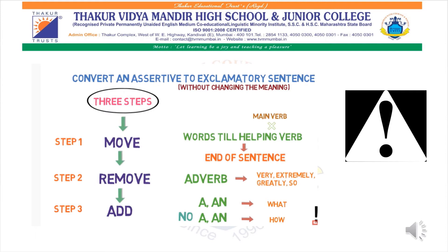I will give you two examples. For the first step, you pick the helping verb and move it to the end of the sentence. Then you remove the adverb — such as very, extremely, greatly. You know what the job of an adverb is: an adverb is a word used to add something to the meaning of a verb or adjective. If in a particular assertive sentence there is A or AN as an article, then you start with 'what.' If there is no A or AN, then you write 'how.' Let's move towards a few examples.